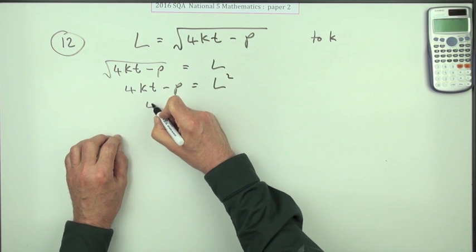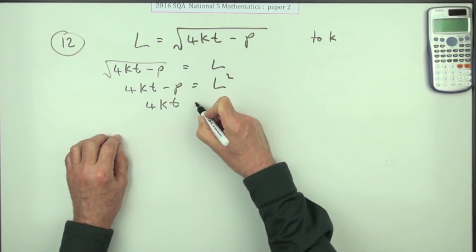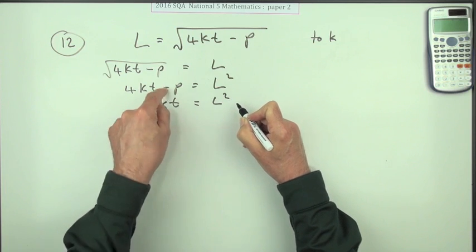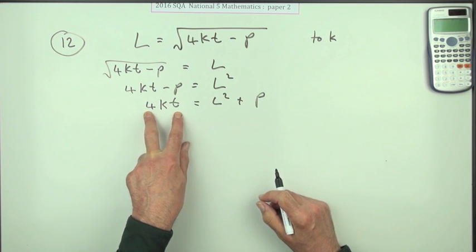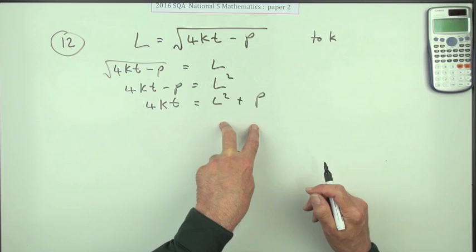Get rid of that P, so that'll be L squared and that'll come across as plus P. Now those two things that are multiplying can come across and divide in one go.